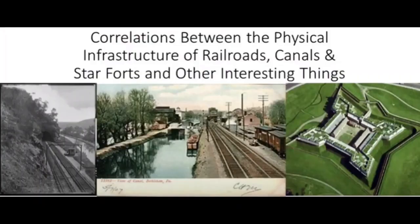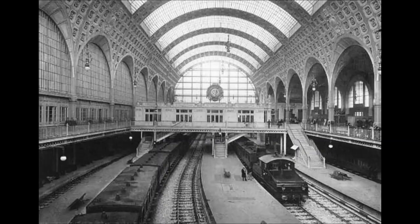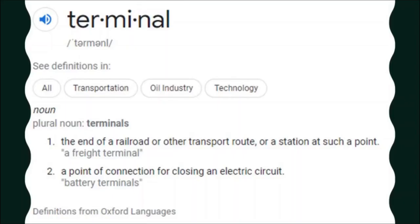When I was doing research on correlations between the physical infrastructure of railroads, canals, and star forts, I ended with a photo captioned 'electric trains operating in the Gare d'Orsay circa 1900.' Electric trains. The Gare d'Orsay Railroad Terminal was said to have opened in Paris in 1900. This finding led me to look up the definition of the word terminal for the first time. There are two definitions: one is the end of a railroad or other transport route, or a station at such a point; the other is a point of connection for closing an electric circuit. There's that electrical circuitry terminology again.